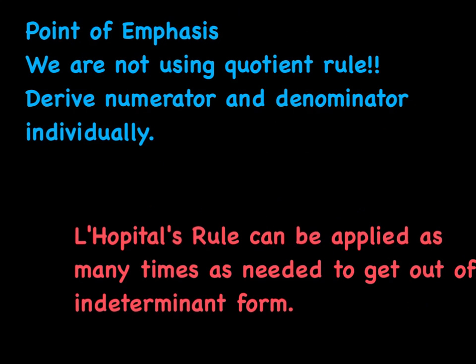Again, I think worth noting in our notebook here, one monster point of emphasis here is that we're not using quotient rule on any of these problems. And it feels kind of funny, but we're treating the numerator and the denominator as if they're individual functions. They're separate functions, and we're just deriving them individually. And another really valuable part of L'Hopital's rule is it can be applied as many times as you need it to. So you might take the first derivative and then still get indeterminate, and then you just reapply it again and again and again until you get out of indeterminate form.